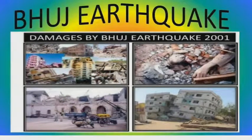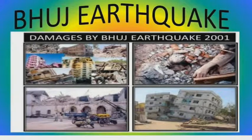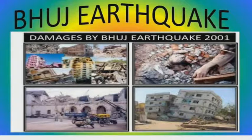A devastating earthquake struck the Bhuj area of Gujarat on 26th January 2001. It killed thousands of people and caused extensive damage to property. Barren Island is an active volcano located in the Andaman and Nicobar Islands of India.